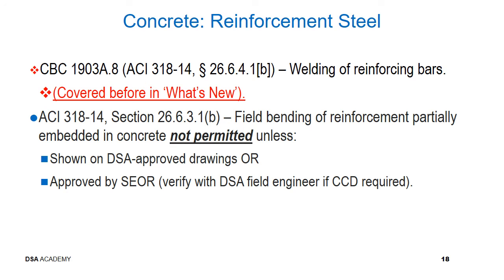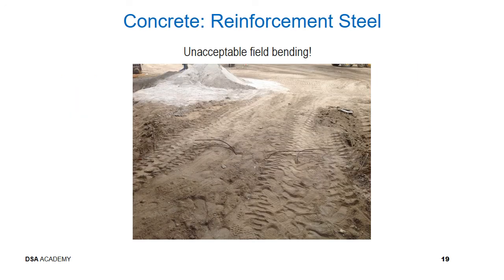ACI 318-14 Section 26.6.3.1B: field bending of reinforcement partially embedded in concrete or dowels is not permitted unless it is shown on DSA-approved drawings or approved by the structural engineer of record. These dowels appear to be driven over and bent multiple times and will likely require replacement, perhaps using epoxy dowels, to be approved by a CCD.